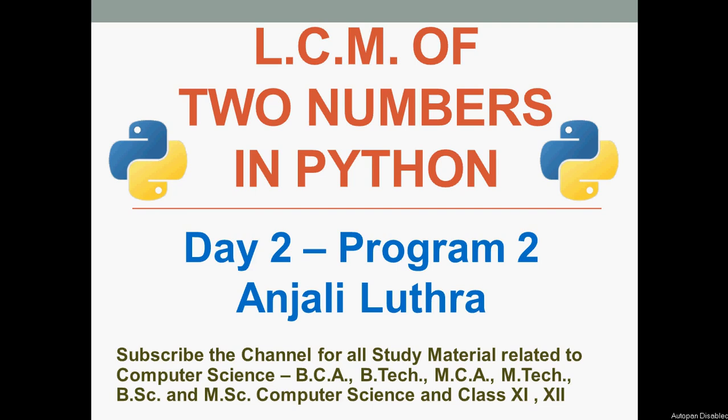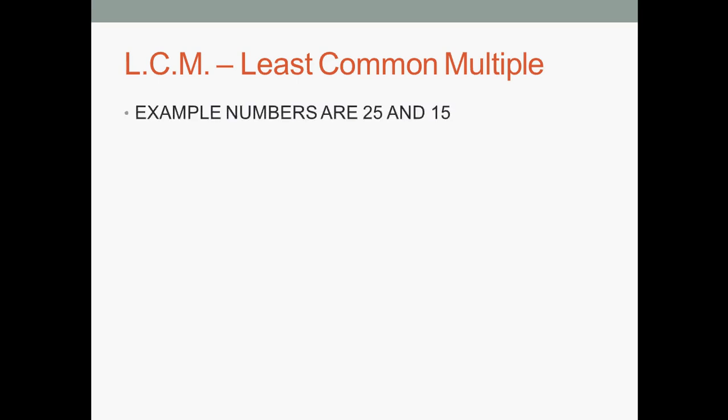In this case, you have to find the LCM of two numbers. You should know what LCM is before you start thinking of the logic or before you start coding for it. LCM is our Least Common Multiple. We already covered the Highest Common Divisor, that was HCF. Now we have Least Common Multiple. For example, take two numbers: 25 and 15.